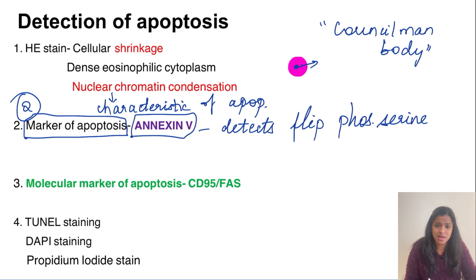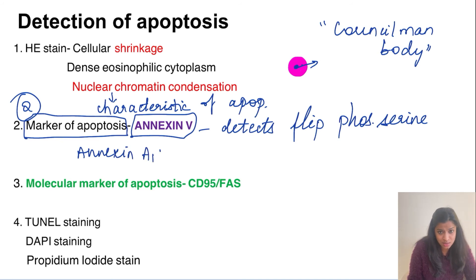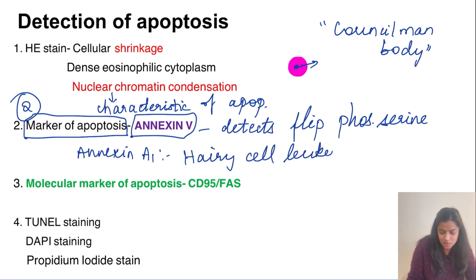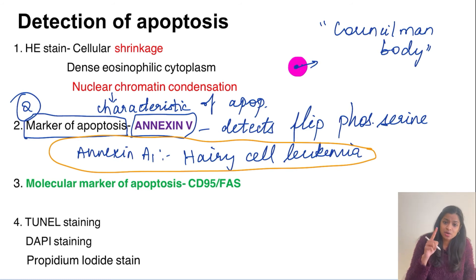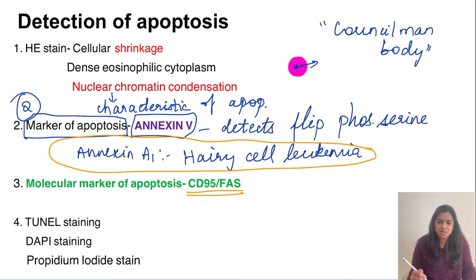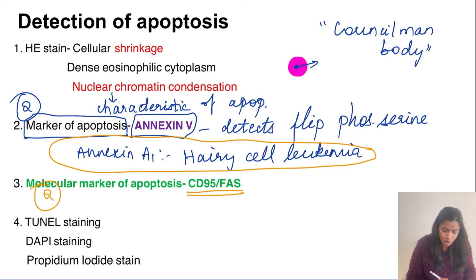Do not confuse Annexin V with Annexin A1, which is a marker for hairy cell leukemia. Annexin V is the marker of apoptosis detecting the flip of phosphatidylserine. If asked for the molecular marker of apoptosis, the answer is CD95 or Fas — the death receptor involved in the extrinsic pathway. These markers are detected by molecular methods.